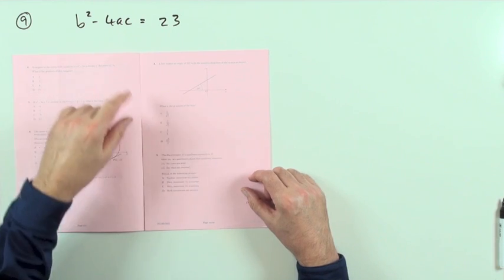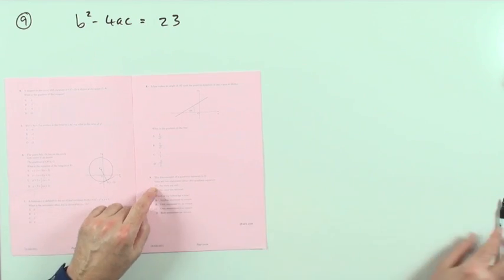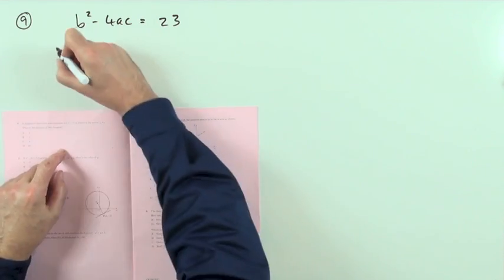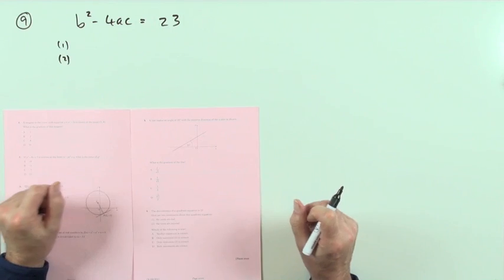Number 9. What does it agree with the quadratic? It tells you the discriminant of it straight away. The discriminant is 23. Here's two statements. It's a multiple selection.